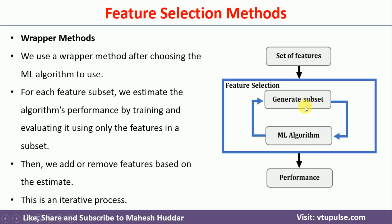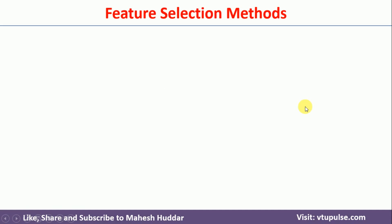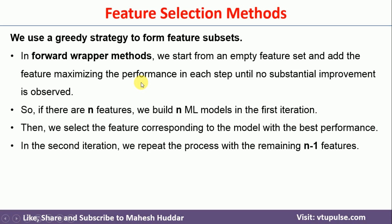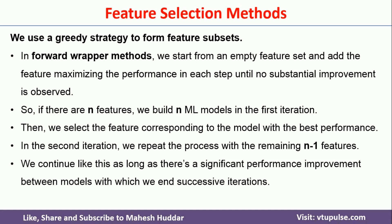To generate subsets of features, there are two methods: forward wrapper methods and backward wrapper methods. In the forward wrapper method, we start with an empty set and then add one feature at a time, measuring the performance of the machine learning model each time. We continue adding features and monitoring model performance, and the configuration that gives the maximum performance is considered the final feature set.